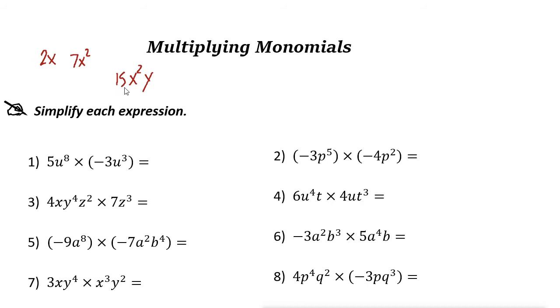For example, the coefficient here is 15. That one is 2. This one is 7. And remember that we need to use multiplication property of exponents when you multiply monomials.